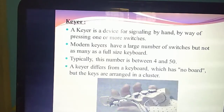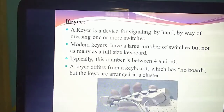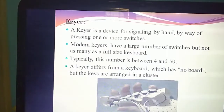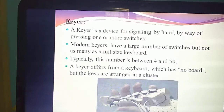In the keyboard, you have seen boards. But in keyer, there is no board-like structure. Instead, the keys are in a cluster format. What do you mean by cluster? Grapes is a fruit that looks like a cluster. Likewise, in this keyer also, these switches look like a cluster — like a bunch. The next input device you have studied is keyer.